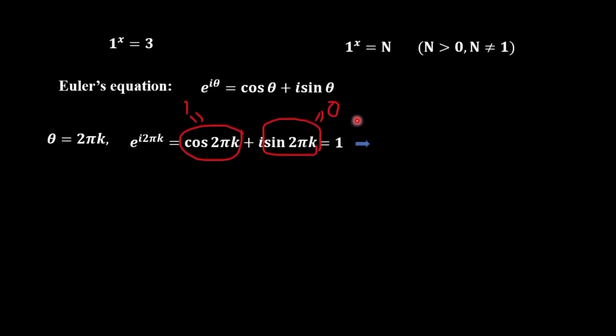So, we can represent 1 as e to the power i2πk. Now, we use this equation here. We replace 1 with this exponent. We multiply the power with x, and we have another form for this equation.